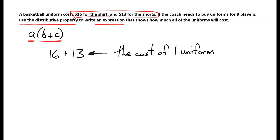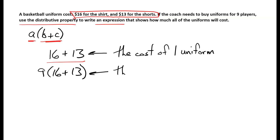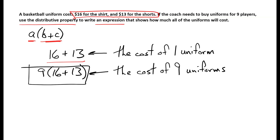The cost of one uniform is 16 plus 13, and the cost of nine uniforms will be nine times the cost of one uniform. So nine times 16 plus 13 is the cost of nine uniforms. And I've just used the distributive property to write an expression that shows how much nine uniforms will cost. And I'm done.